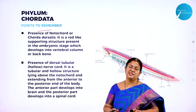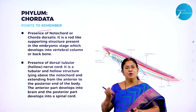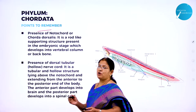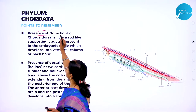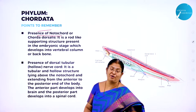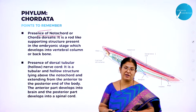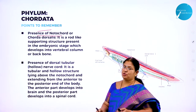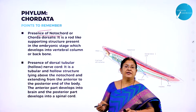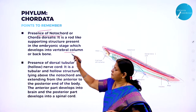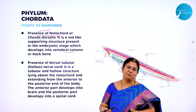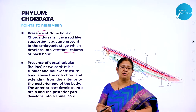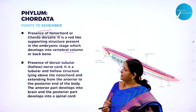Now let us see what are the most distinctive features about phylum chordata and why we call them higher animals. The first very important chordate character is the presence of notochord. Invertebrates means without backbone; vertebrates and chordates have a notochord which is later developed into a vertebral column or backbone. The vertebral column is a supporting structure.